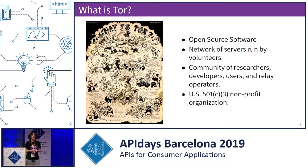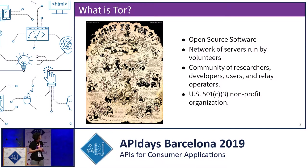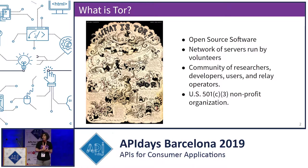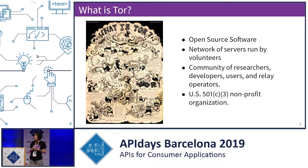Tor is software that allows you to communicate anonymously. Tor stands for the Onion Router, which is the name of the original software that started this whole thing. Tor is also a network of decentralized servers run by volunteers around the globe and organizations that want to provide bandwidth for the network. Tor is also a community of researchers, privacy researchers, anonymity researchers, developers, relay operators, and users. And we're also a U.S. nonprofit.